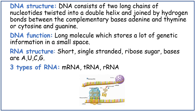DNA structure: DNA consists of two long chains of nucleotides twisted into a double helix, joined by hydrogen bonds between the complementary bases — adenine and thymine, cytosine and guanine. DNA function: it's a long molecule which stores a lot of genetic information in a small space. RNA structure: it's a short, single-stranded ribose sugar molecule. The bases are A, U, C and G. There are three types of RNA: mRNA, tRNA and rRNA.